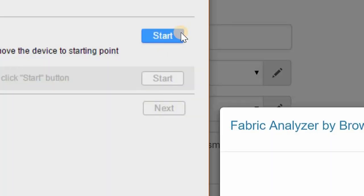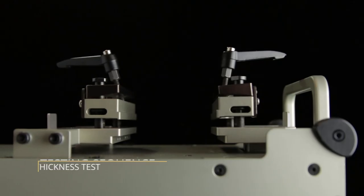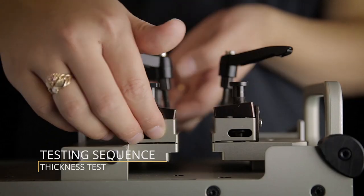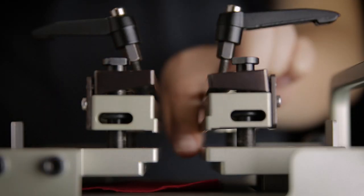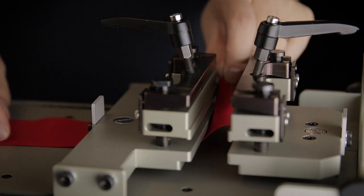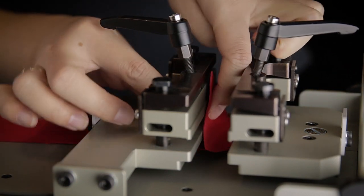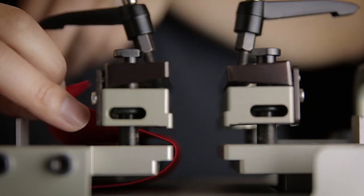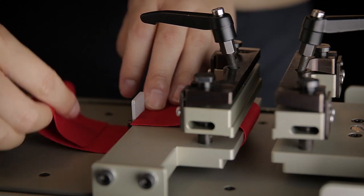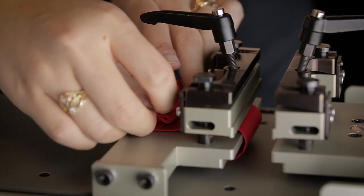First, hit the Start button to get the movable arm into the correct position for testing. Lift the clamp, slide the fabric underneath the movable arm, then wrap the fabric around the movable arm and underneath the clamp. Make sure to fold the excess onto the movable arm so it is not touching the base plate.